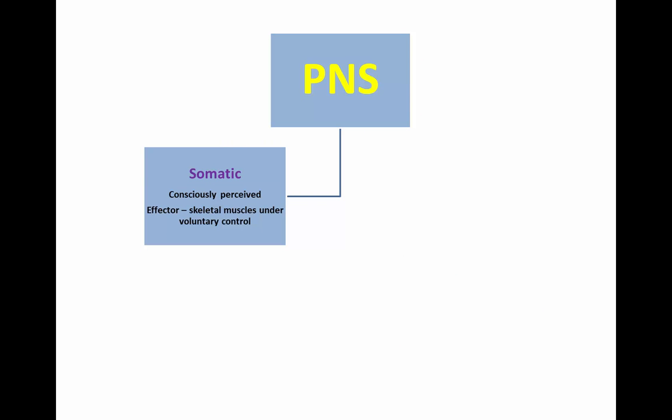The somatic nervous system is concerned with voluntary actions of effectors — your skeletal muscles — due to consciously perceived sensations that relate to the external environment.